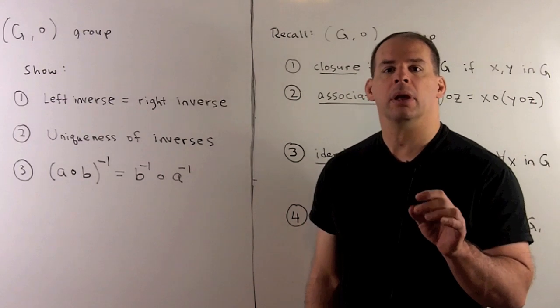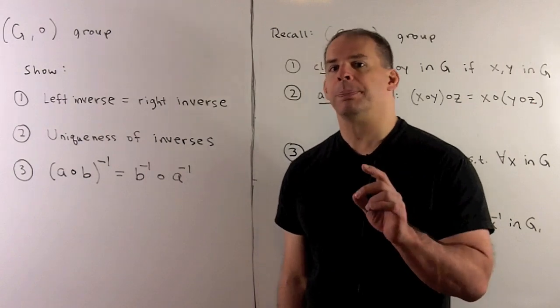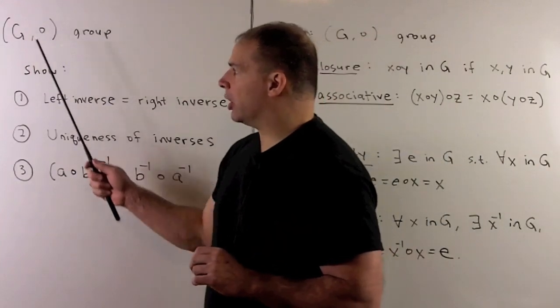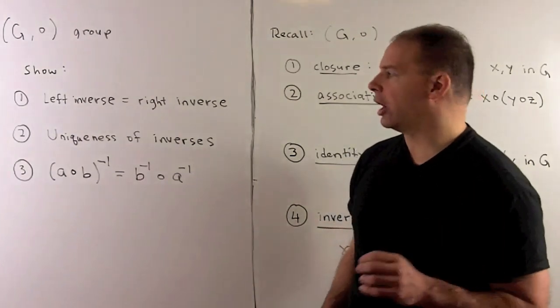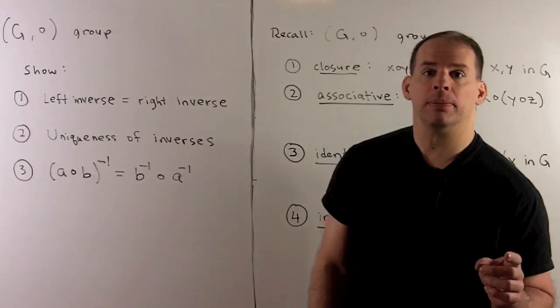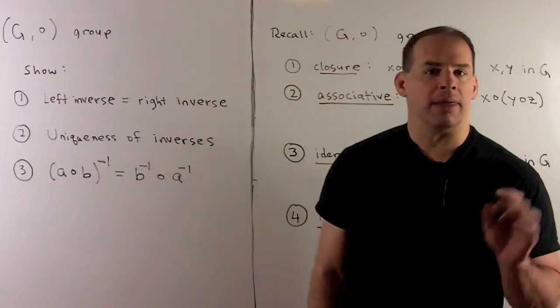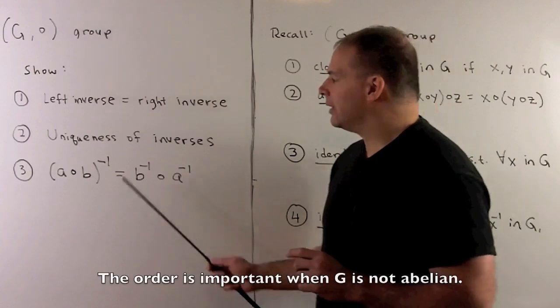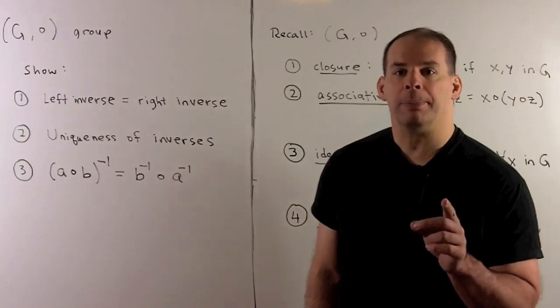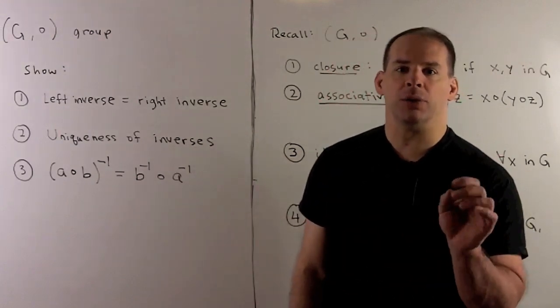When we first define groups, there are many tiny details we need to prove before we can get to good material. For here, we'll prove some small facts about group inverses. So we'll let G be our group, we'll denote the multiplication by circle, and we want to show that an element of our group has a left inverse and a right inverse, they must be equal. Then we'll show that any element in the group has exactly one inverse, and then we'll use that to prove the following useful identity: the inverse of A times B is equal to B inverse times A inverse. Now for another exercise, we'll have a corresponding list for the identity element, and I'll leave that to you to state and prove.